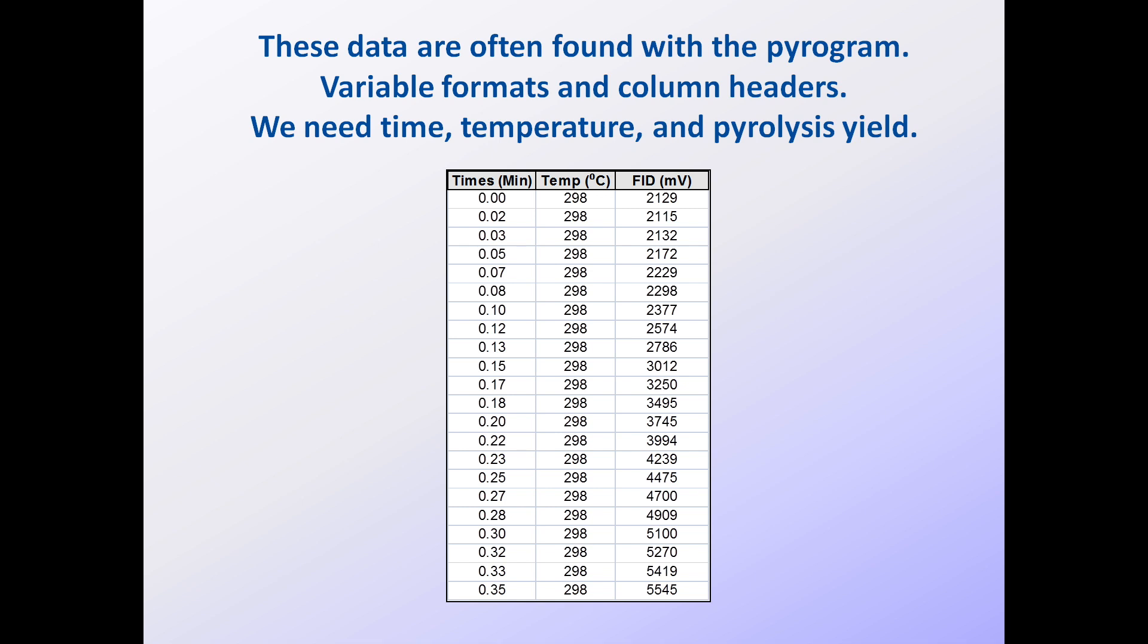The digital data sometimes accompany the pyrograms themselves. If they aren't provided automatically, the laboratories should be able to give them to you if you request them. The necessary data are found in three columns, often together with other columns of data such as CO2 that aren't important for hydrocarbon generation kinetics.